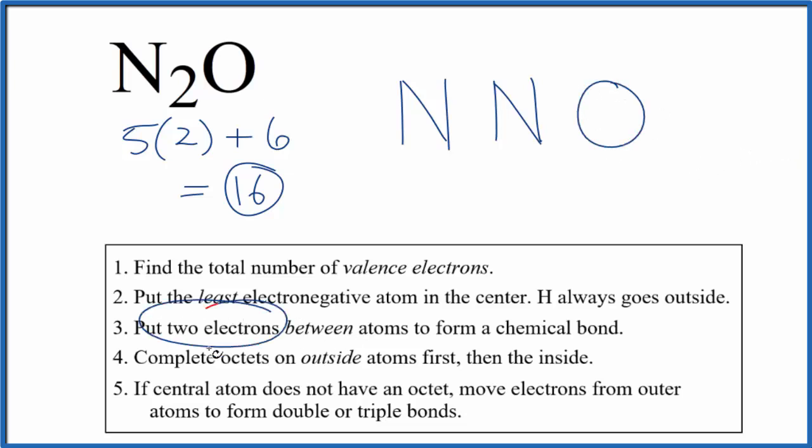Now we can put a pair of electrons between the atoms to form the chemical bond. So we've used four, we have 16 total valence electrons. Let's complete the octets on the outside atoms. Now this nitrogen and this oxygen, they have octets, and we've used all 16 valence electrons.